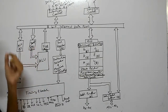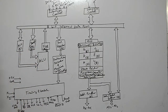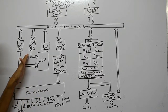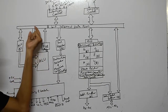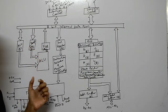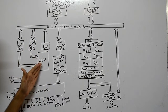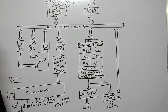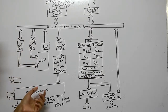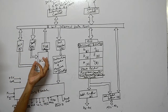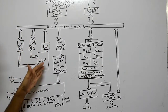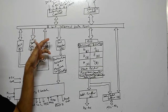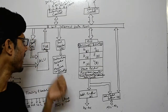The temporary register holds data when the accumulator is full or the ALU is busy. After the temporary register, data goes to the ALU. When the result is processed, the value or data is stored back to the accumulator.